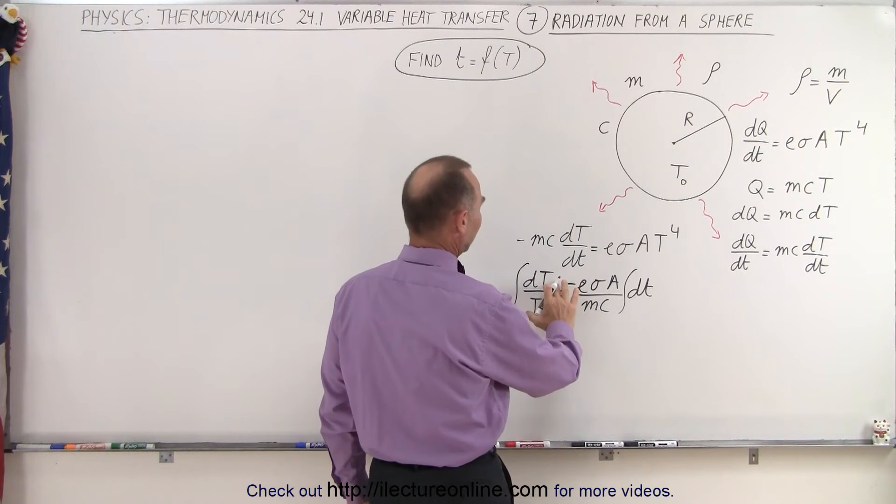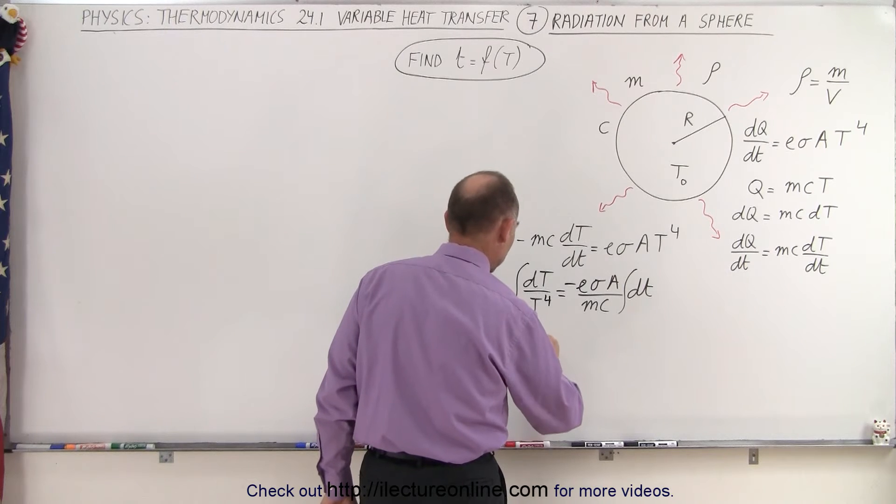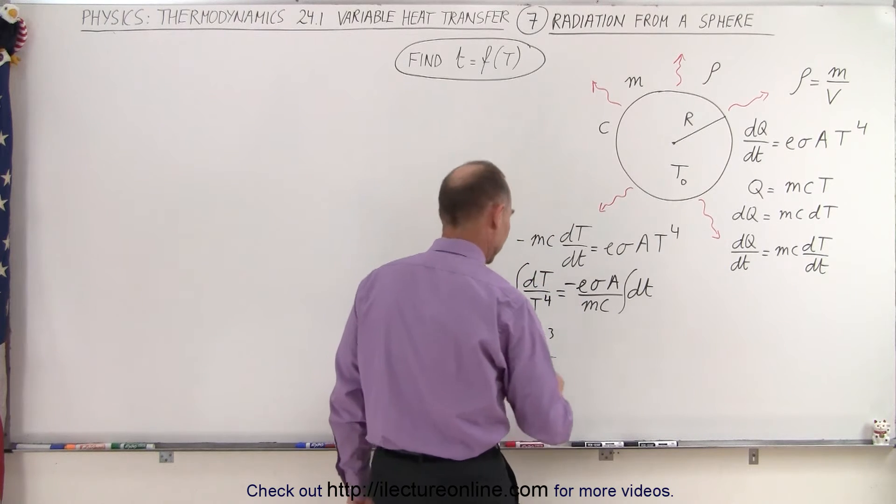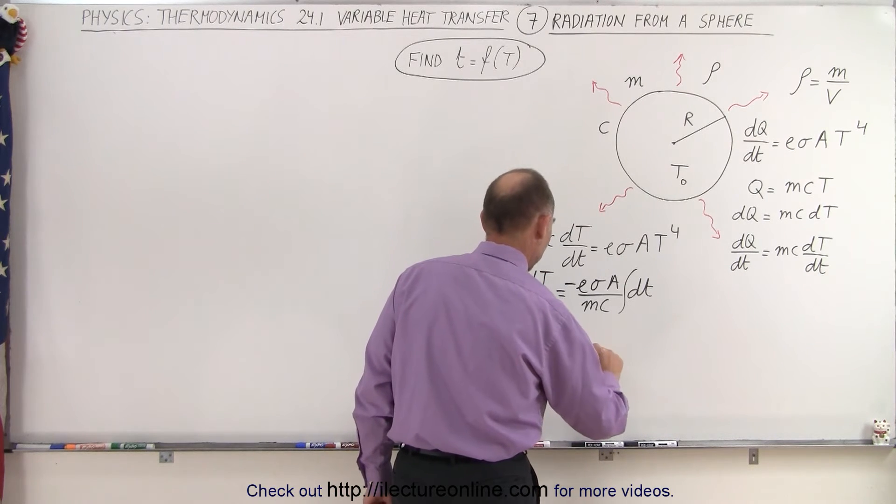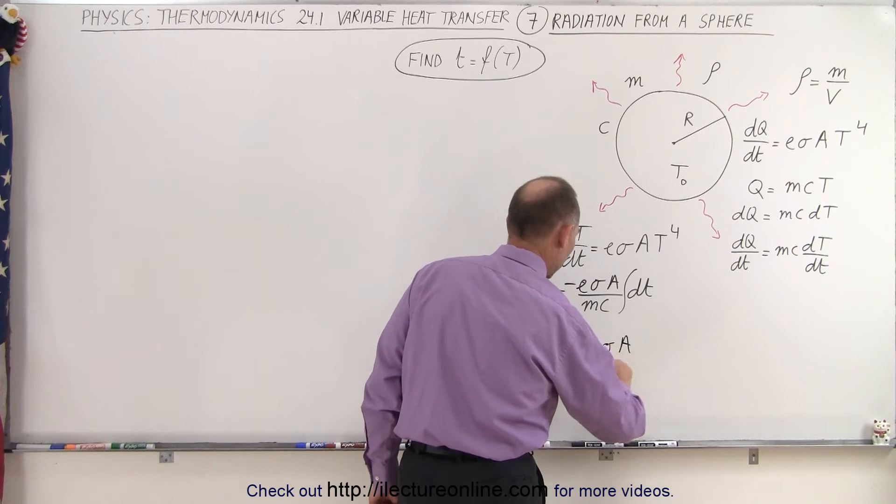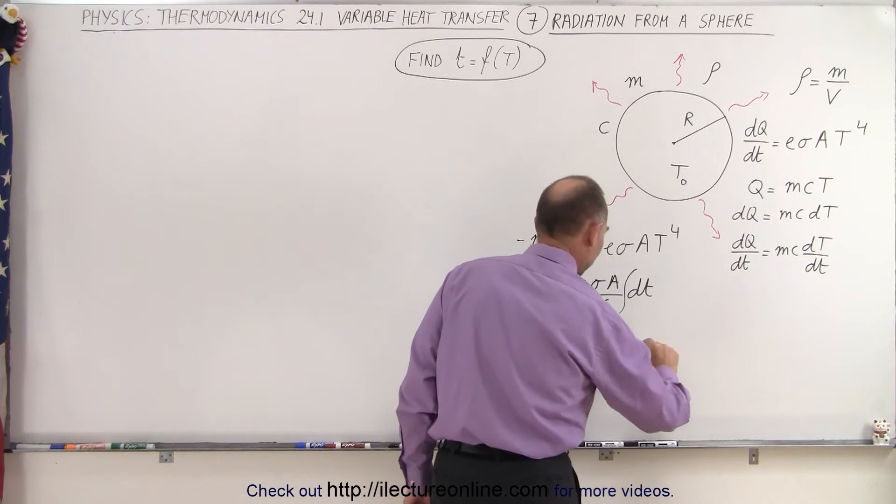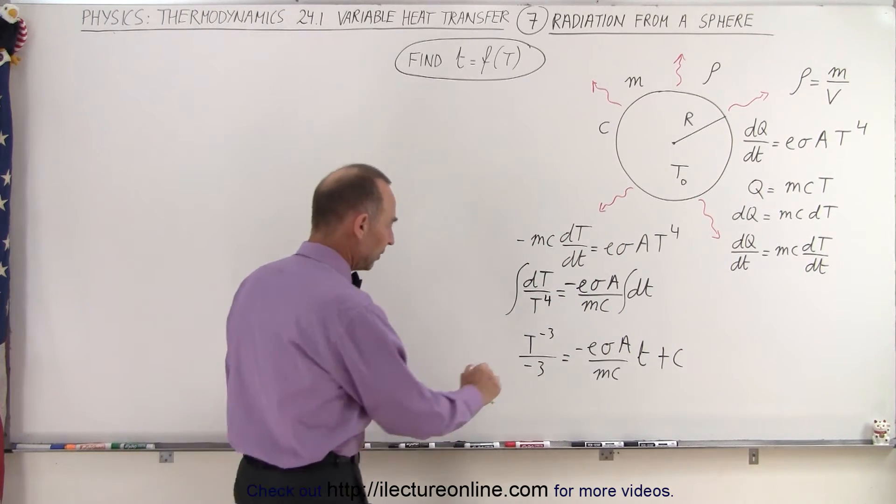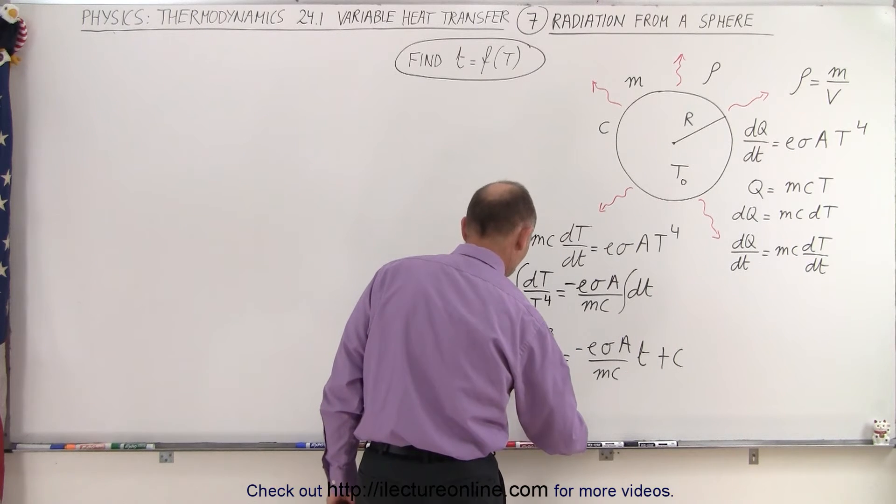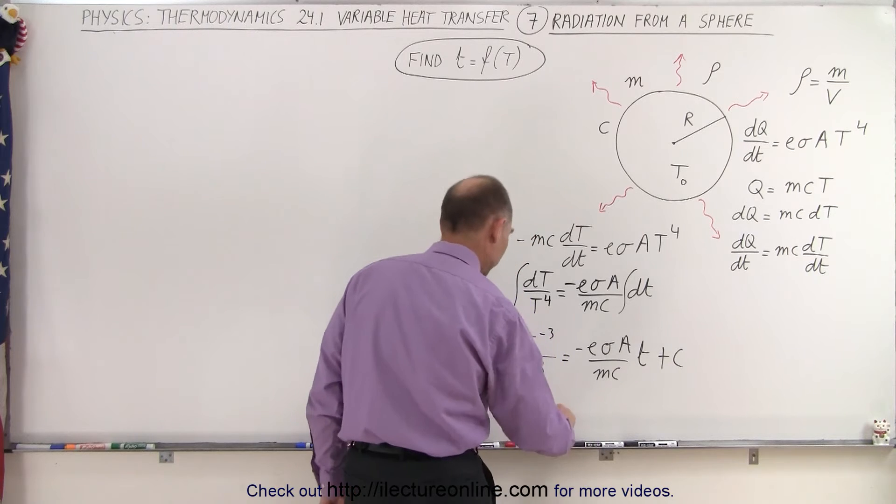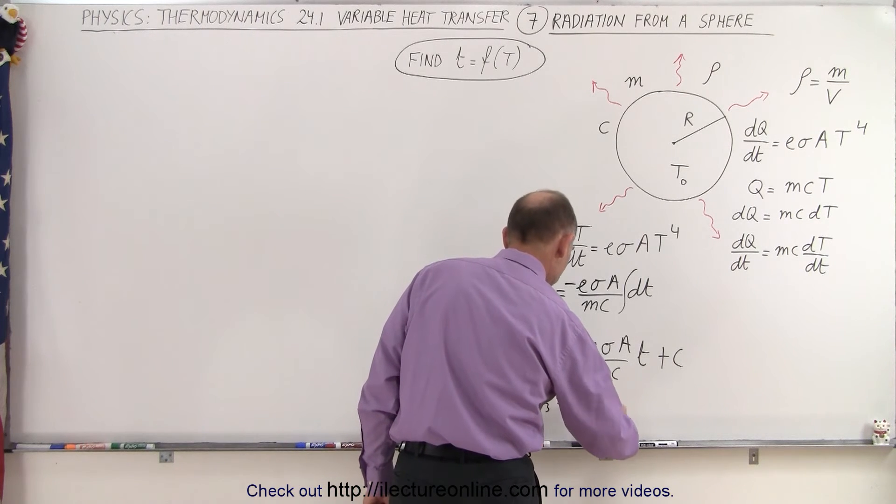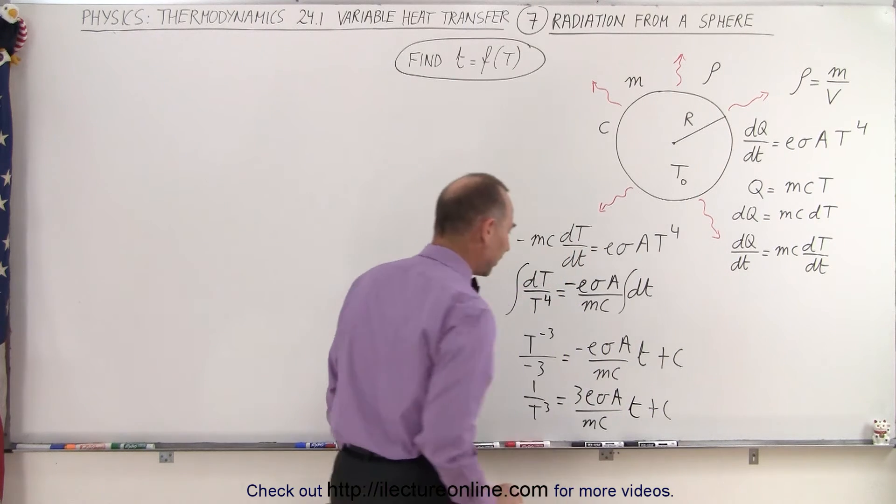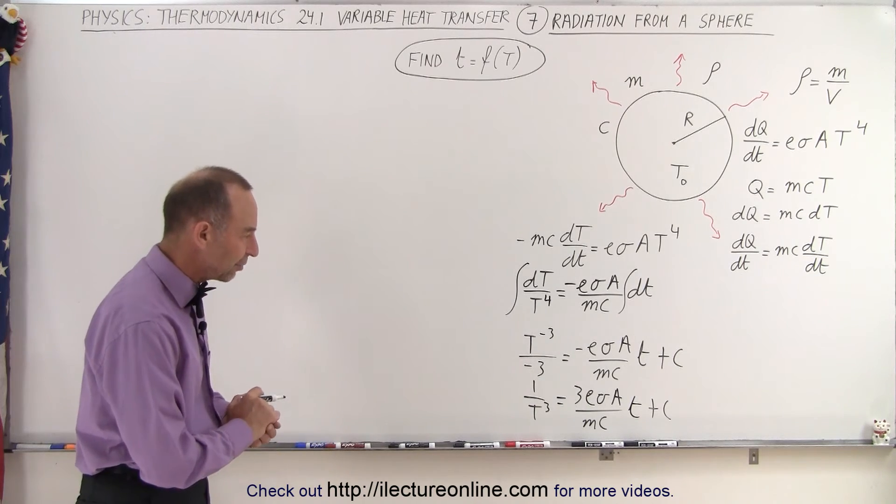On the left side this is T to the minus four power in the numerator so this becomes T to the minus three divided by the new exponent minus three. We'll keep the constant on the other side and that would then be equal to minus E sigma A over MC and that would be times T plus a constant of integration. All right, let me put the minus three over here, the T down here. So we end up with one over T to the third power is equal to three E sigma A over MC times T plus a constant of integration. So now we need to determine what that constant of integration is.